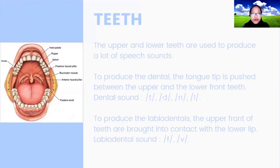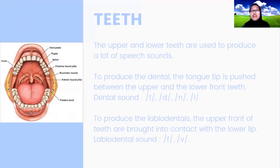Next, the upper and lower teeth are used to produce a lot of speech sounds. To produce the dental sounds, the tongue tip is pushed between the upper and the lower front teeth. Dental sounds include sounds like T, D, and L.